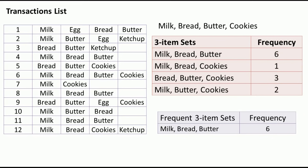The only frequent three-itemset is milk-bread-butter with a frequency of 6. Its support is 6 divided by 12, which equals 50 percent — above the 33 percent minimum. Since we have only three unique items in our frequent set, forming four-itemsets is not possible, so this is the final step.